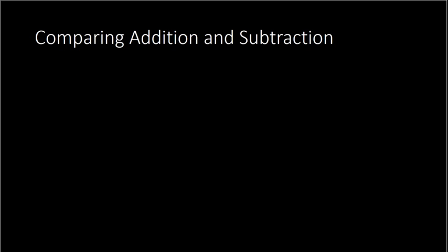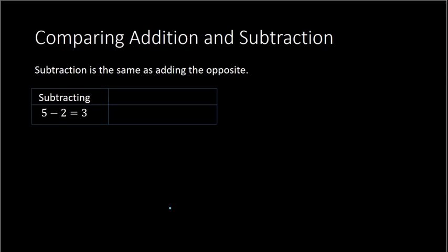Now we can move on to subtraction. If you can add integers, you can subtract as well, because subtraction is the same thing as adding the opposite. For example, 5 minus 2 equals 3. Comparing that with adding the opposite: instead of subtracting positive 2, we add negative 2 — so 5 plus negative 2 also equals 3. This verifies that subtracting is the same as adding the opposite.